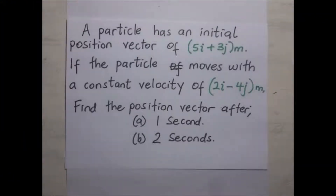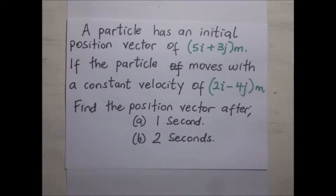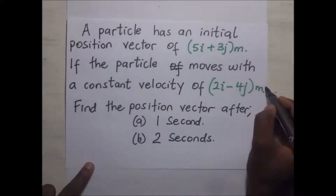A particle has an initial position vector. If the particle moves with a constant velocity of 2i minus 4j meters per second, find the position vector after one second and after two seconds.